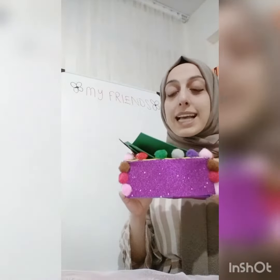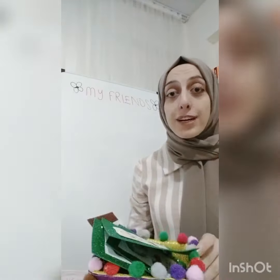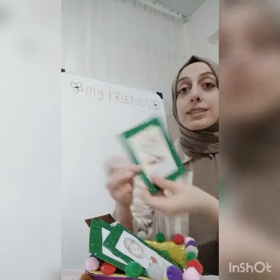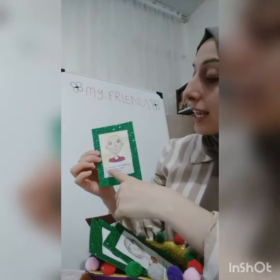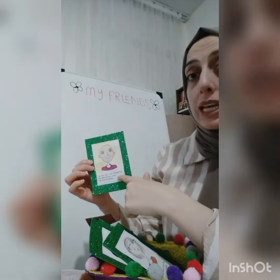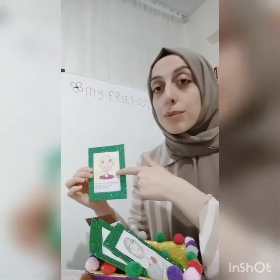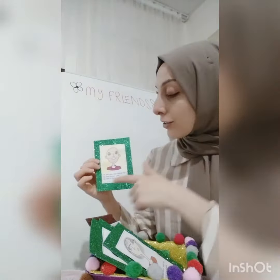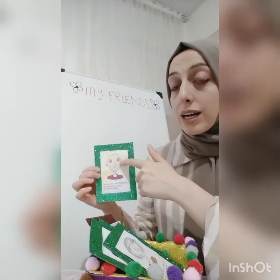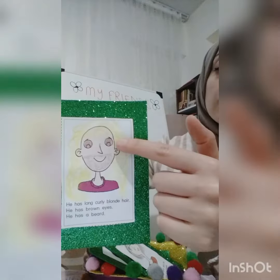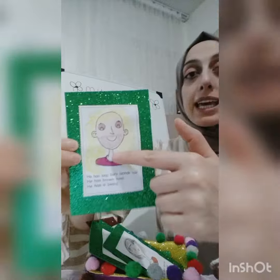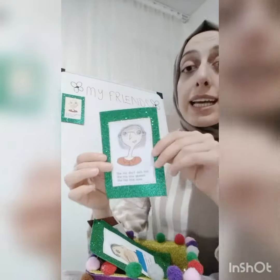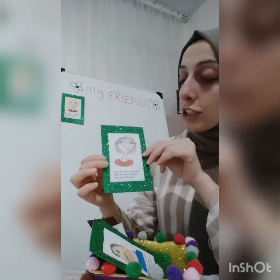This is my friend's box and there are my friends here. Let me introduce you to my friends. Let's start with Jack. His name is Jack. He has long curly blonde hair. He has brown eyes. And he has a beard.